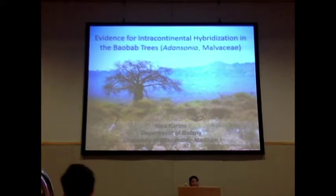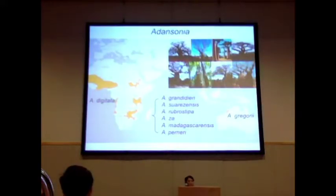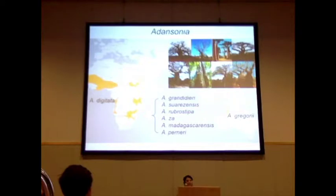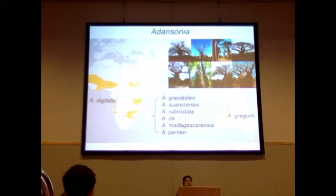Our system of study is the iconic baobab trees, or the genus Adansonia, which is comprised of eight relatively well-recognized species. Previous phylogenetic analyses have found three distinct lineages based on geography — Africa, Madagascar, and Australia — but were unable to resolve the relationship between these three lineages, and questions remained about species relationships within Madagascar.